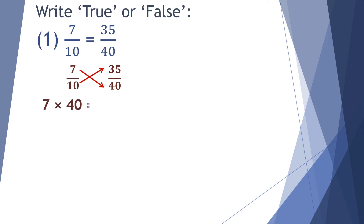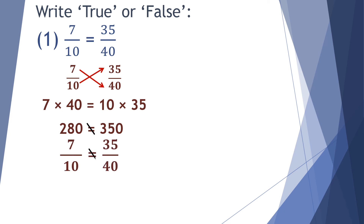Do the cross multiplication: 7 multiplied by 40 is equal to 10 multiplied by 35. Everyone knows how to do multiplication, so pause the video and do the multiplication on your own and check. 7 multiplied by 40 is equal to 280 and 10 multiplied by 35 is equal to 350. So we can say that 7 upon 10 is not equal to 35 upon 40 — that means this statement is false.